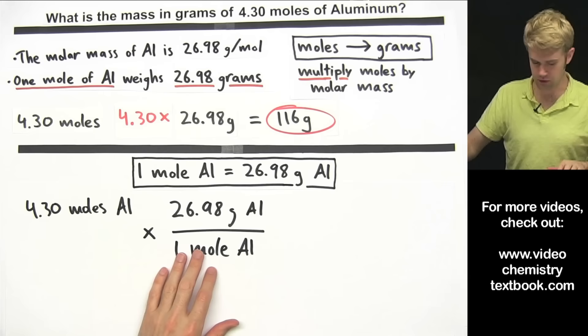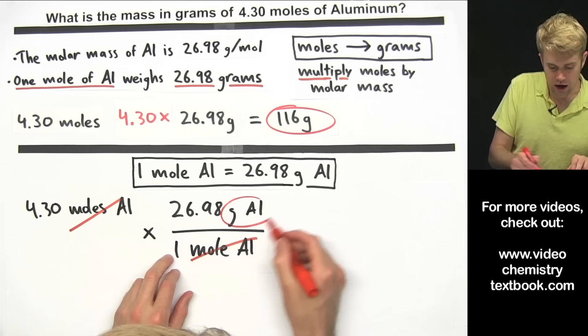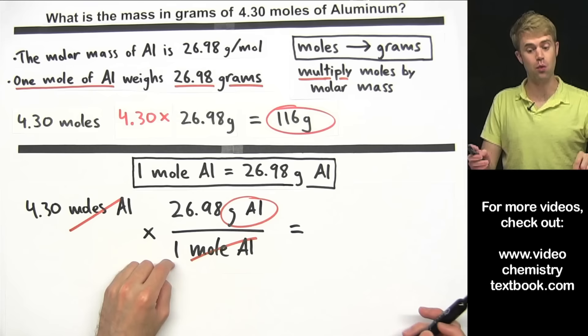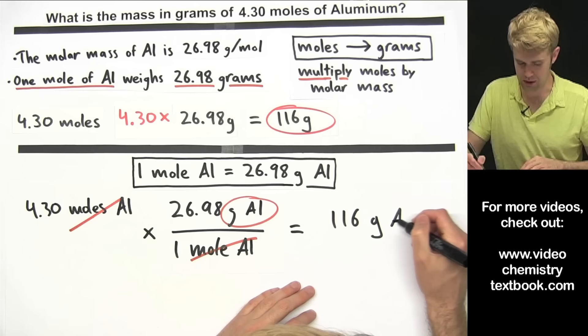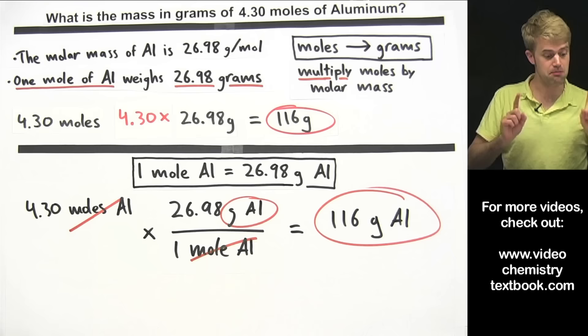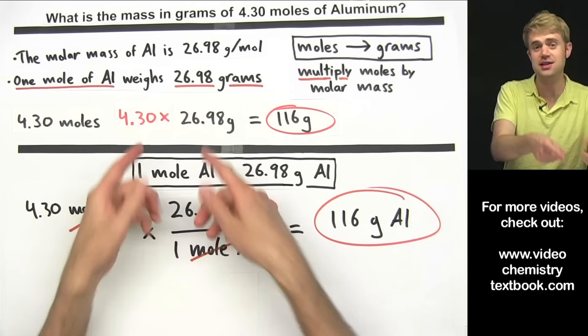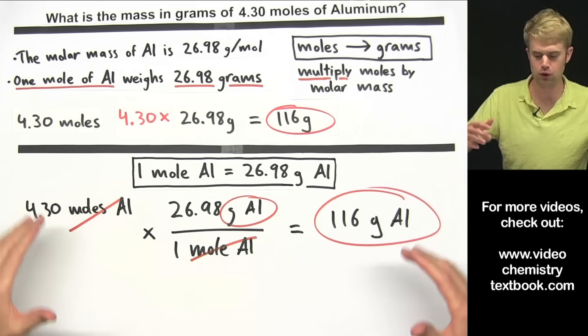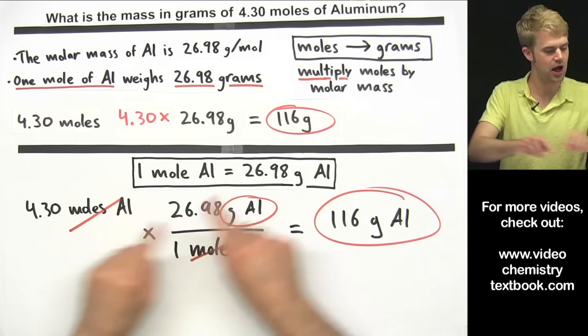Now we have moles of aluminum on top canceling with moles of aluminum on the bottom, leaving us with grams of aluminum, which is exactly what we want. The math is 4.30 times 26.98 divided by one, giving us 116 grams of aluminum rounded to three significant figures. This is the exact same math as the think-through method — you're just taking the moles and multiplying by the molar mass.